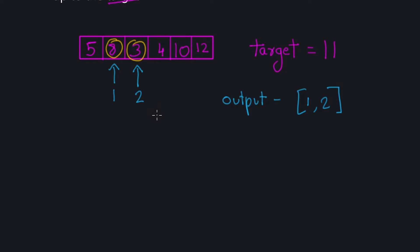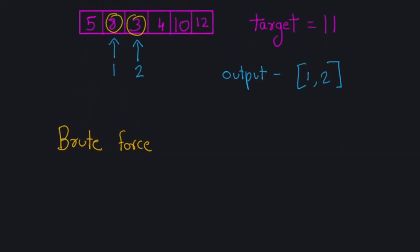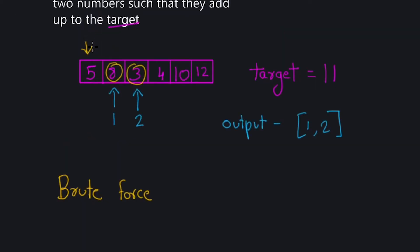Let's look at some of the ways to approach this when solving it with code. One typical approach is called brute force. What you do in brute force is go through and check each combination. Starting from the first element, you go through all the other numbers to see if any of them add up to the target with it. If not, you move to the next element and repeat until you find the pair that adds up to the target.